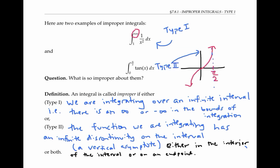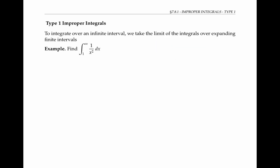It's possible that both of these situations could occur for the same integral, and that's also an improper integral. This video will focus on type one improper integrals. A type one improper integral asks us to integrate over an infinite interval. To do this, we take the integral over larger and larger finite intervals and take the limit.